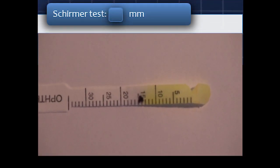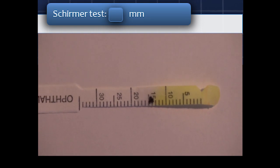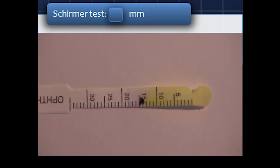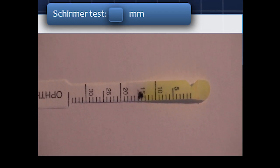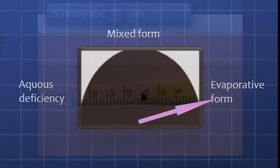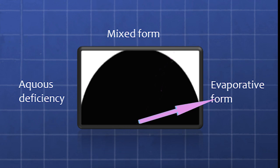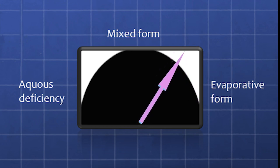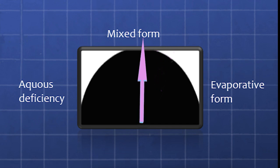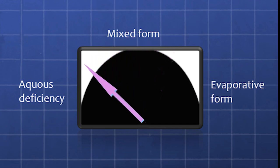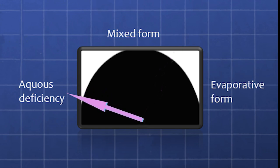Finally, perform the Schirmer test with topical anesthesia and report the outcome in millimeters. Just after inserting the data, the Lipid Test will indicate the type of deficiency by an arrow ranging from lipid deficiency to the other extreme, water deficiency, passing through the possible mixed forms.